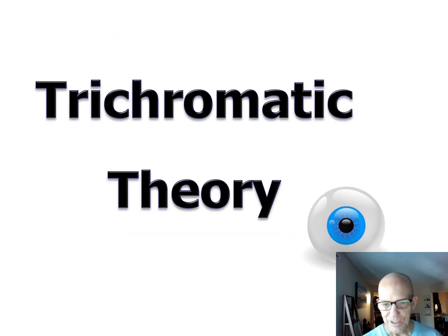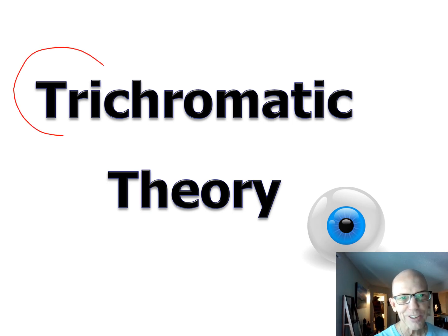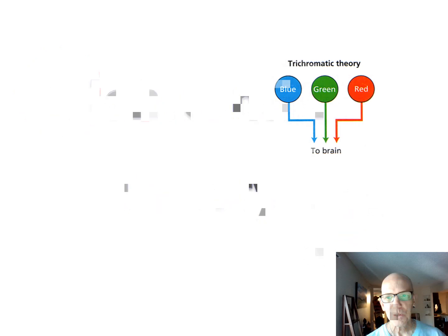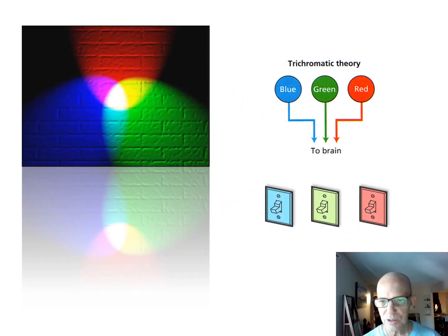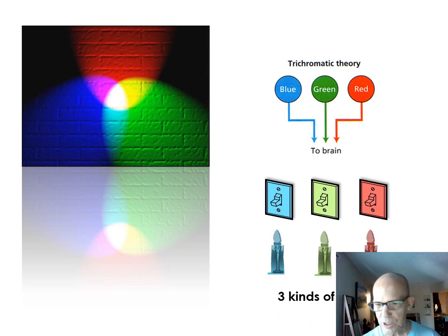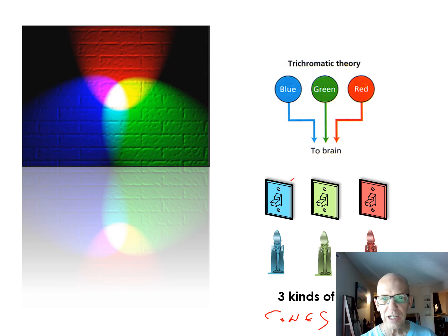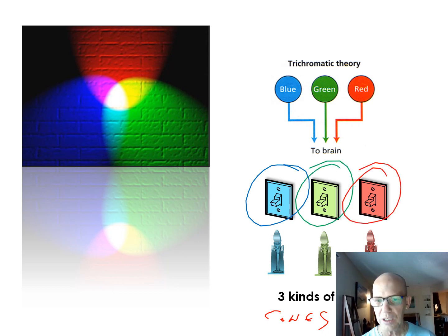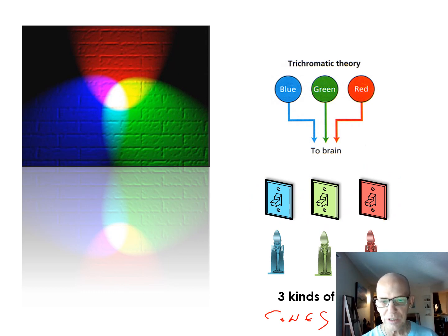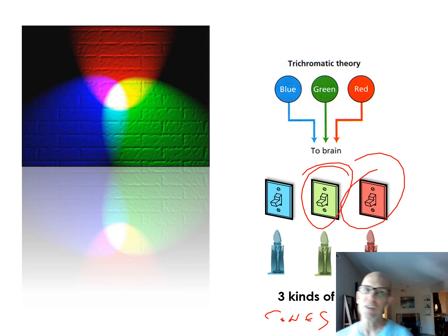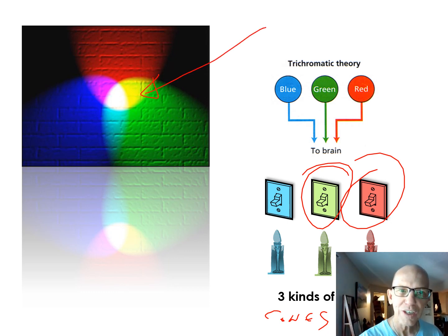The first theory of color vision is trichromatic — three-color theory. It says we see these three colors because we have three kinds of cones: one detects only blue light, one detects only green, and one detects only red. If you shine a blue light, only the blue cone fires. What doesn't make sense is that shining yellow light makes both the red and green cones fire — as seen in a theater shining green and red lights together to create yellow.